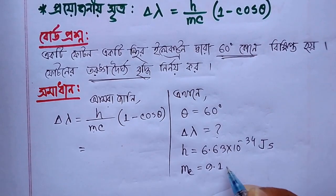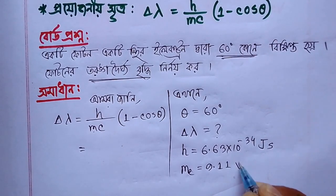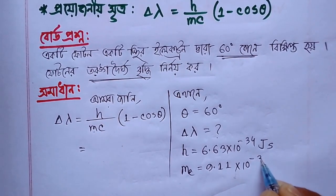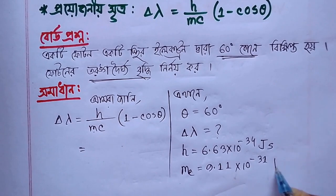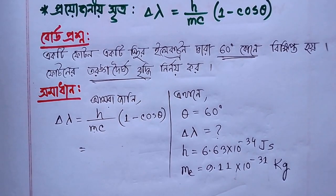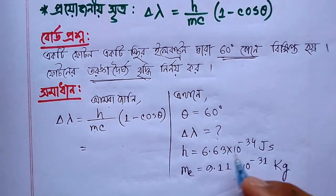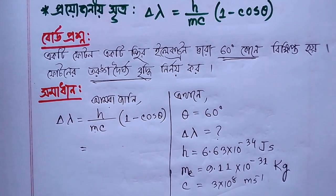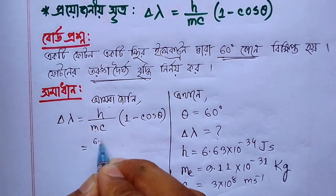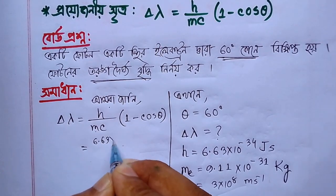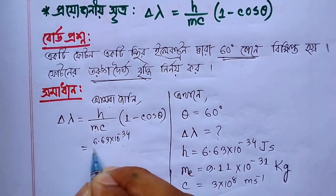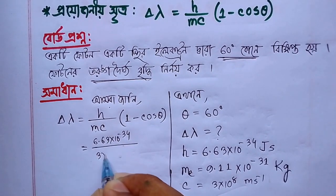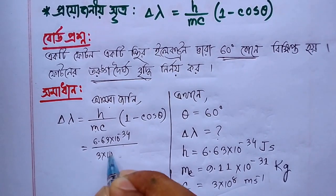1.9 times 11 times 10 to the power minus 31. This is x1. 3 times 10 to the power minus 1. H is 6.63 times 10 to the power minus 34. H is 3 times 10 to the power.